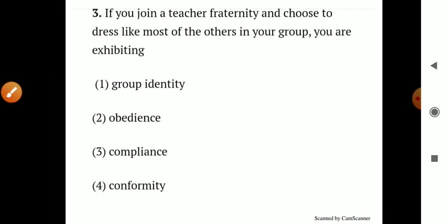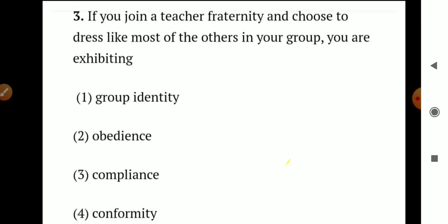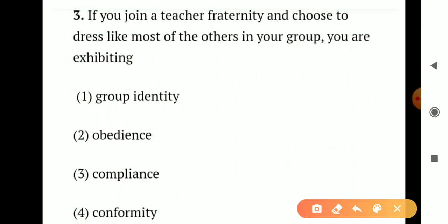Question number 3. If you join a teacher fraternity and choose to dress like most others in your group, you are exhibiting: Option 1 - group identity. Option 2 - obedience. Option 3 - compliance. Option 4 - conformity. When you join a teacher fraternity and dress like your friends or colleagues, you are exhibiting group identity. So the correct answer is Option 1 - group identity.